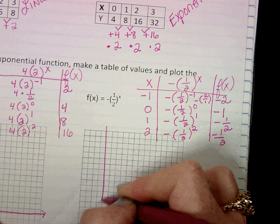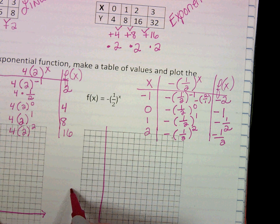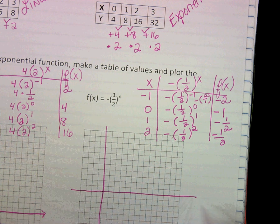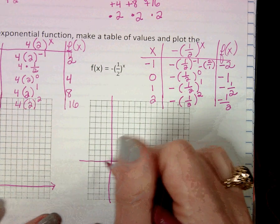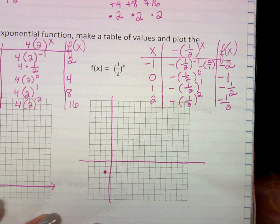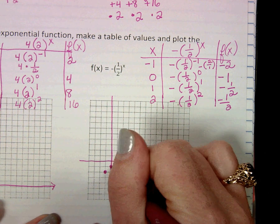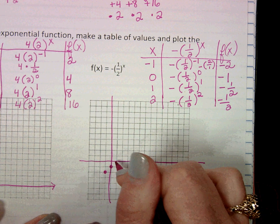This graph's going to look a little bit different. Still going to have that kind of curved effect. We've got negative one, negative two, zero, negative one, one, negative a half,